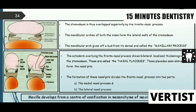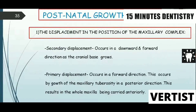The maxilla develops from centers of ossification in the maxillary process of the first arch. This topic — postnatal growth of the maxilla — frequently appears as a long question in theory papers. The answer should be written under three main headings describing how the maxilla grows.